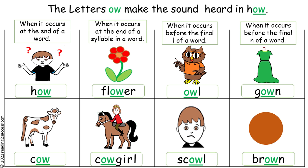Tip two: use O-W when it occurs before the final L of a word, as in 'owl' and 'scowl.' And tip three: use O-W when it occurs before the final N of a word, as in 'gown' and 'brown.'